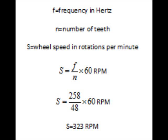So we have a frequency in Hz, but we need to calculate the wheel speed. To calculate the wheel speed, we need the number of teeth on the tooth ring and the frequency. So we divide the frequency by the number of teeth, which gives us the rotations per second, multiply that by 60 to give us rotations per minute. So we have 258 Hz divided by 48 teeth times 60 equals 323 RPM.